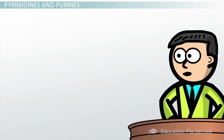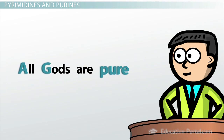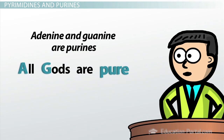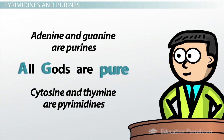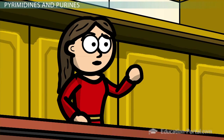You might wonder how I can remember that, but it's really quite simple: all gods are pure. Adenine and guanine are purines, and by process of elimination, that means cytosine and thymine have to be pyrimidines. Yes, that's a very nice mnemonic aid — adenine and guanine are purines.